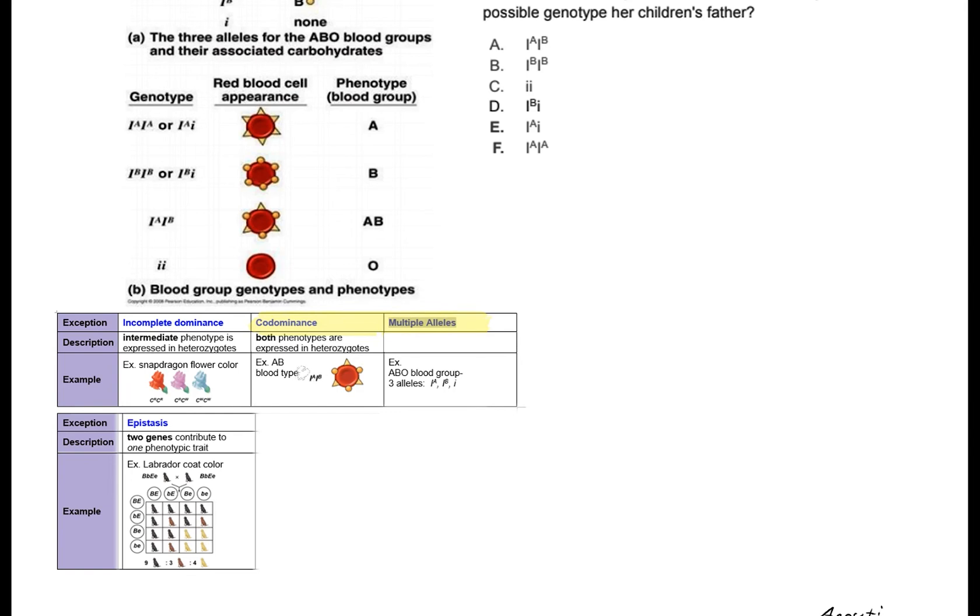And you see this here where you have the IA, IB blood cell there with both the triangles from blood type A and both the little circles from blood type B. You don't see an intermediate rather you just see the appearance of both phenotypes in that heterozygous IA, IB individual.